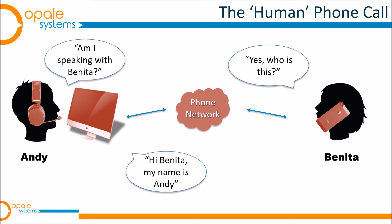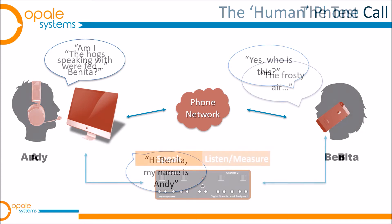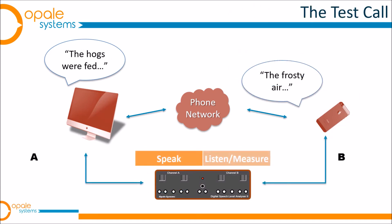To see how POLQA and PESQ are used, let's go back to an ordinary human phone call. Here we see a person in a call centre making a call to someone on a mobile phone — he speaks, she listens, she replies. The use of POLQA and PESQ simply consists of replacing those two users at each end of the call with a measuring system, which does two things: it injects a clean reference speech signal into one end of the call, and captures, measures and analyses that signal at the far end — in both directions.